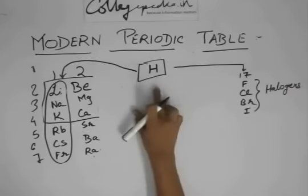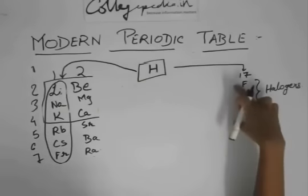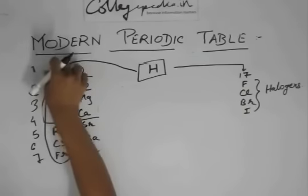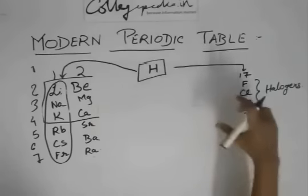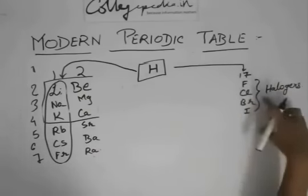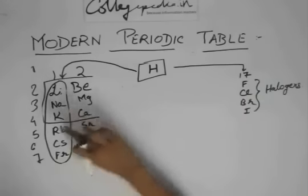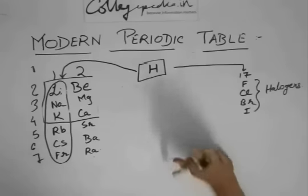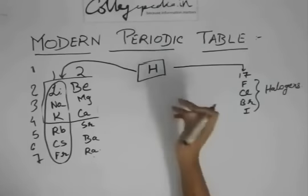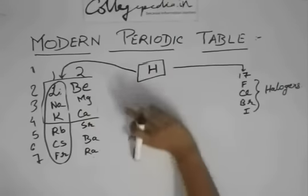Hydrogen has some properties similar to Group 1 and some properties similar to Group 17. So where to place it? If we place it in Group 1, it would seem it doesn't belong to Group 17, and vice versa. There will be a tug of war between Group 1 and Group 17. So the fair decision is: don't keep it in any group — just keep it separate.